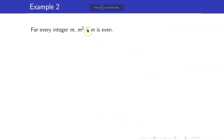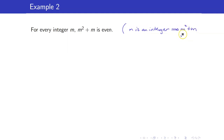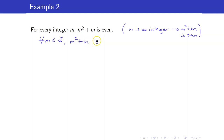Next, let us show that for every integer m, m² + m is even. Take note that this is the same as the implication: if m is an integer, then m² + m is even. If we write this using symbols, this becomes: for all m in Z, m² + m is even. So for our proof, we start with: let m be an integer.